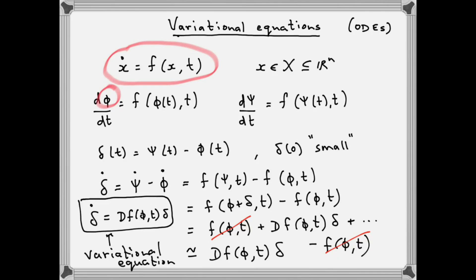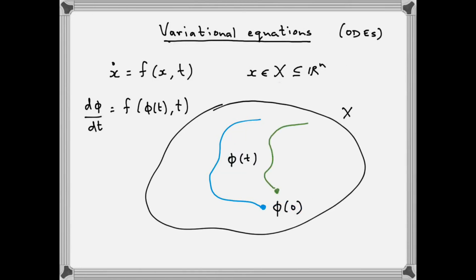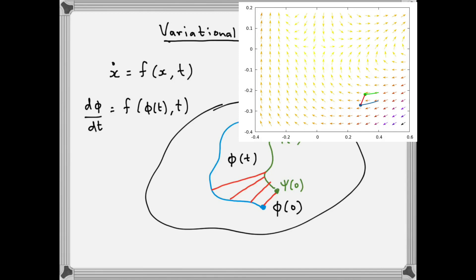Notice that when we wrote down the variational equation, we dropped the approximately-equal-to sign and changed it into an exactly-equal-to sign. Returning to the picture, we have the new solution psi, and we were trying to follow what happens to the distance between the two solutions phi and psi as we move forward in time — and we were led to the variational equation. But because we changed an approximately-equal-to into an exactly-equal-to, we got a linear differential equation which no longer gives us exactly the difference vector, but only approximately, provided that we're interested in close initial conditions and for a short time.